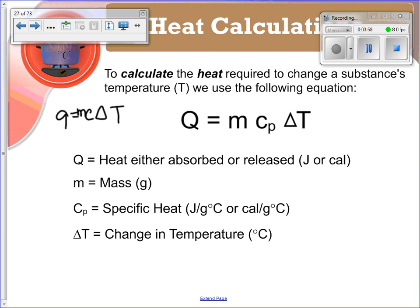Q is your heat absorbed or released. Remember, if you're absorbing heat, Q is a positive value. If you're releasing heat, Q is a negative value. Your m is your mass in grams. It's important to note your specific heat capacity is a constant value. Either it will be given to you or you're going to be calculating it. It can be in either one of these two given units.